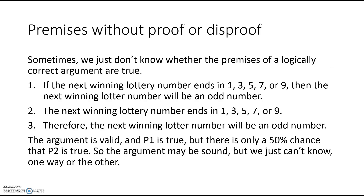Sometimes you'll have a case where you know the argument is logically valid, but you're not sure whether the premises are all true. For example: if the next winning lottery number ends in 1, 3, 5, 7, or 9, then the next winning lottery number will be an odd number (true by definition). Premise 2: the next winning lottery number ends in 1, 3, 5, 7, or 9 — nobody knows whether that's true or false; it's a 50-50 chance. Therefore the next winning lottery number will be an odd number. That is a valid argument, but we don't know whether P2 is true, so this argument may be sound, but we just can't tell.